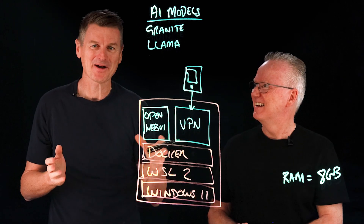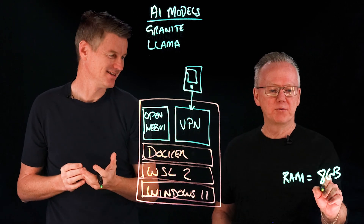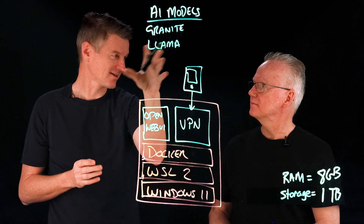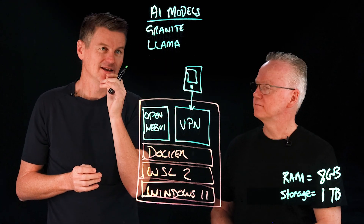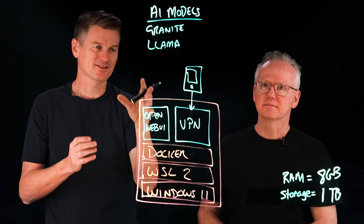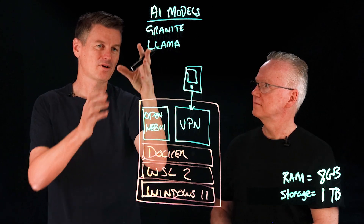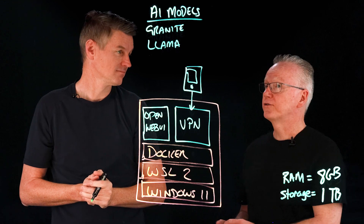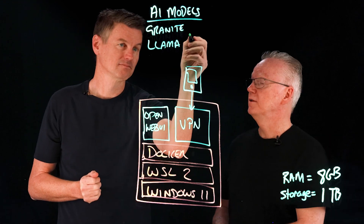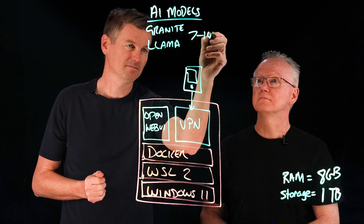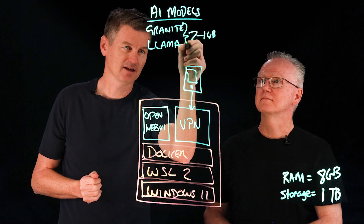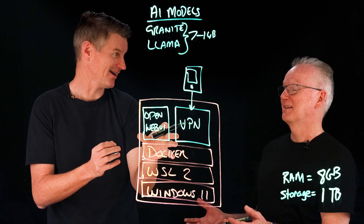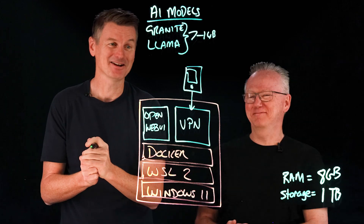What about storage? I would recommend at least one terabyte, because some of these models can get pretty big. These models come in different sizes — what parameter count sizes were you using with Granite and Llama? Anywhere between 7 and 14 billion parameters. I have run up to 70 billion. How did that work out? Slow.